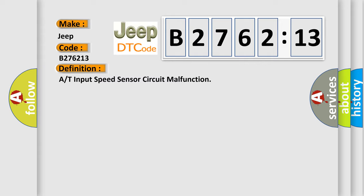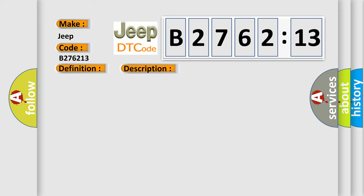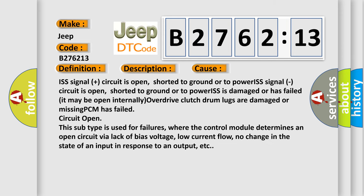The basic definition is A/T input speed sensor circuit malfunction. And now this is a short description of this DTC code: Vehicle driven in first, second or third gear with output speed sensor OSS signals present, and the PCM did not detect any ISS signals for one second with the vehicle in second gear.